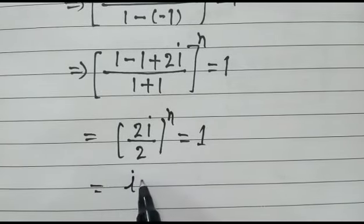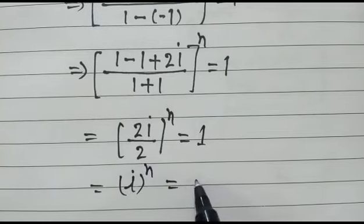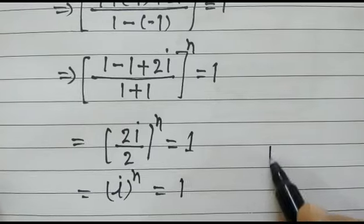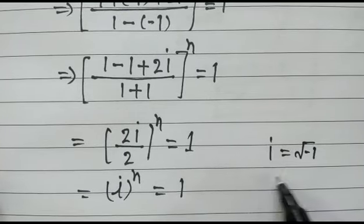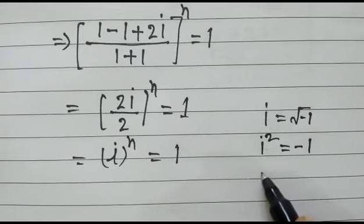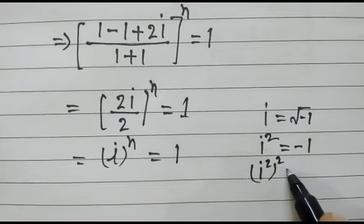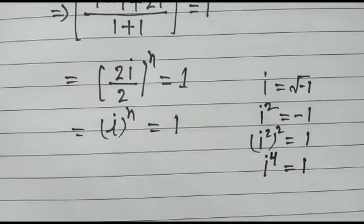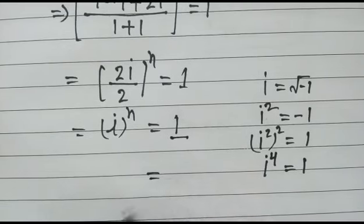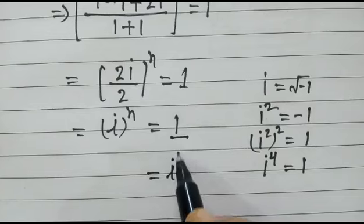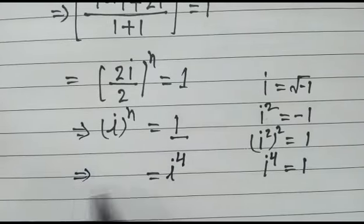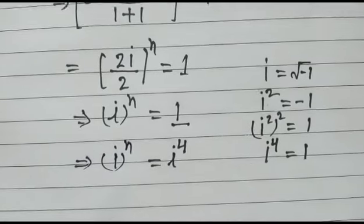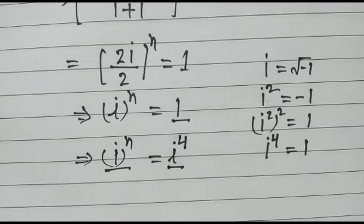So i to the power n is equal to 1. We know that i squared equals minus 1, and i to the power 4 equals 1. So in place of 1, we can write i to the power 4. Since we have the same base i on both sides, i to the power n equals i to the power 4, therefore n is equal to 4.